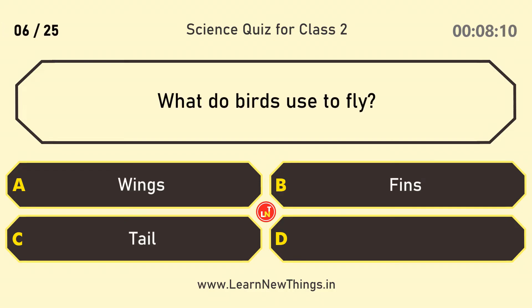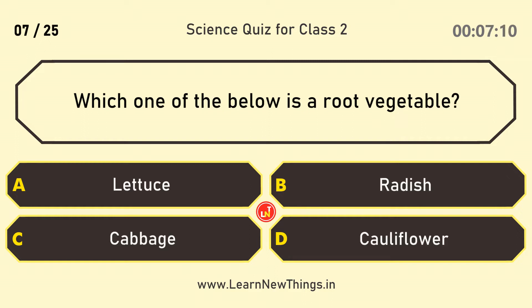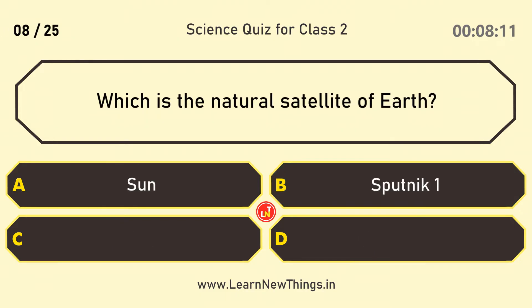What do birds use to fly? Wings. Which one of the below is a root vegetable? Radish. Which is the natural satellite of Earth? Moon.